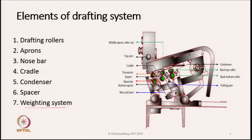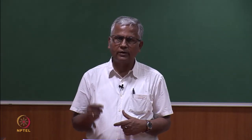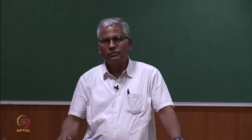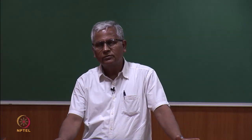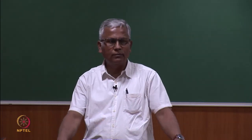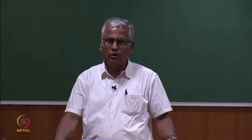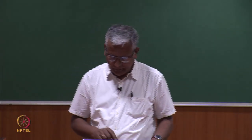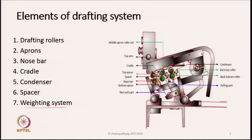Only then will the motion from the bottom rollers be transmitted to the fibers, because ultimately we have to move the fibers and we need rollers to drive them. You can also see that the drafting unit is a little bit inclined as shown in the diagram. We will learn why it is inclined — there is a reason for it. Now let us look at these elements one after the other.